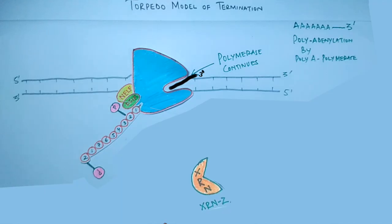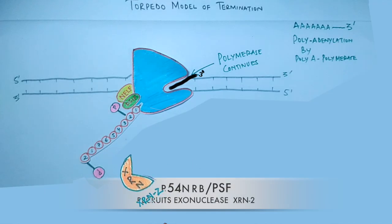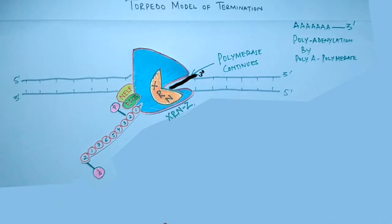We see XRN2 is recruited by p54-nrb-PSF complex to the RNA to facilitate the degradation of uncapped leftover mRNA stretch. So it must be noted here, this XRN2 that is the exoribonuclease, it works on uncapped mRNA.